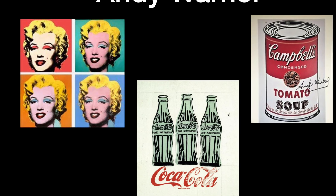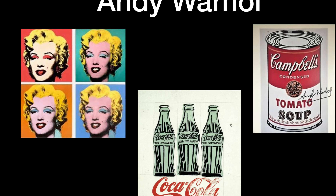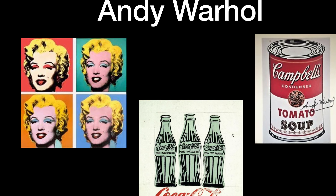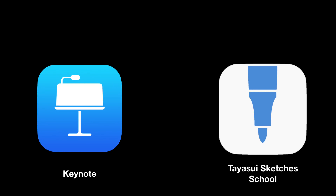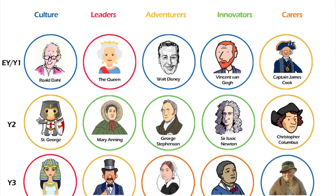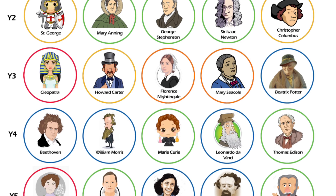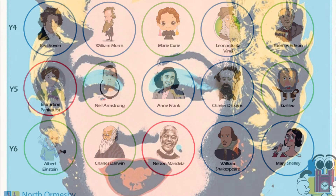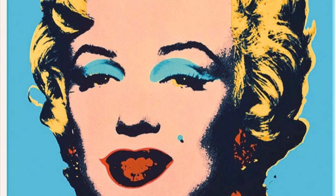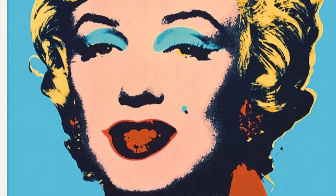Today we're going to be creating some digital art inspired by the artist Andy Warhol. The two apps you will need are Keynote and Skechers School. We are going to be creating a portrait, so you could choose one of our remarkable people. To show you what to do, I'm going to be using Andy Warhol's portrait of Marilyn Monroe.